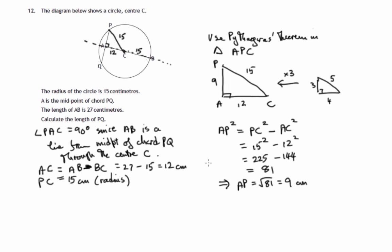So AP is 9, therefore chord PQ, now we know that A is the midpoint of PQ, so PQ would be twice AP, which is twice 9, which is therefore 18 centimetres. So we've got the chord PQ being 18 centimetres in length.